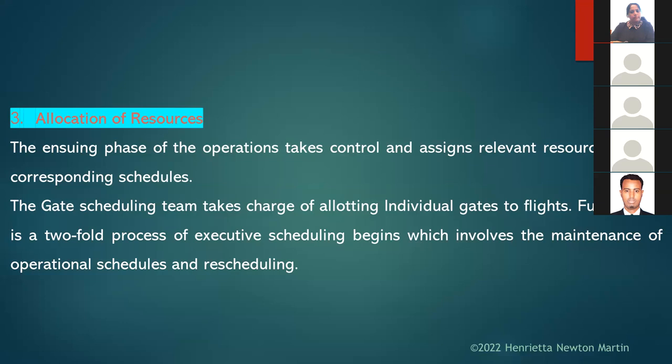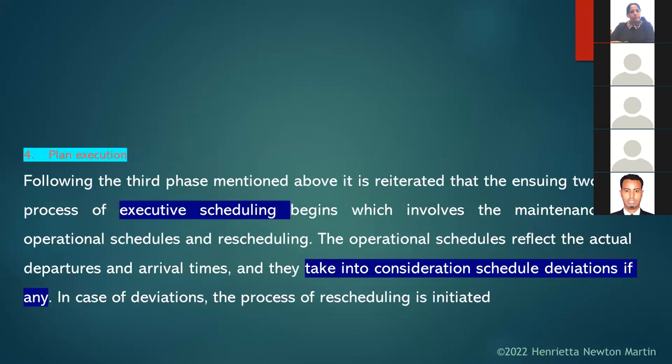The execution of plan phase involves maintenance of operation schedules and rescheduling. Operation schedules reflect the actual departure and arrival times, taking into consideration schedule deviations — any changes in the schedule. In case of deviations, the process of rescheduling is initiated; for example, if a flight is delayed by one hour, they begin rescheduling the flight.